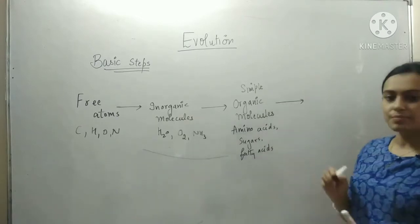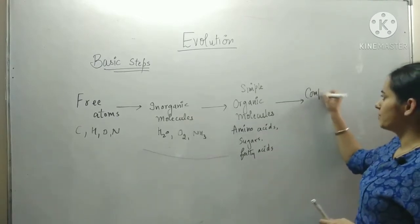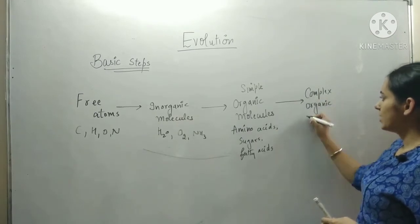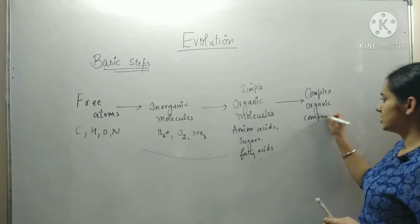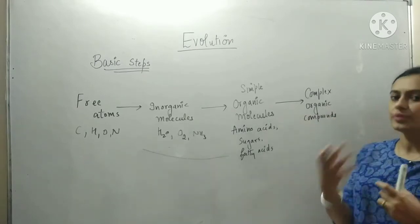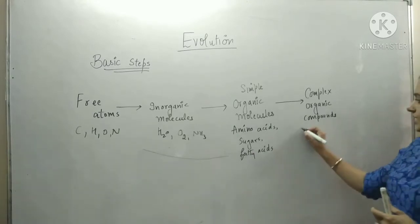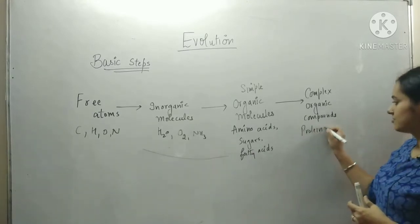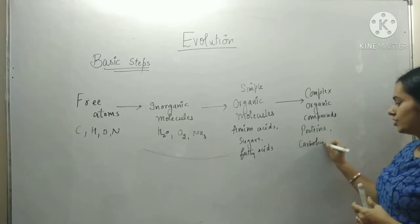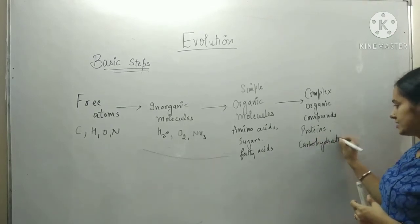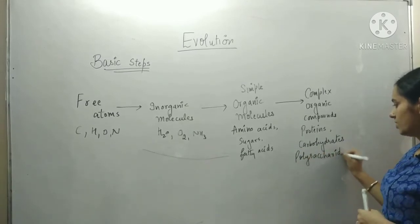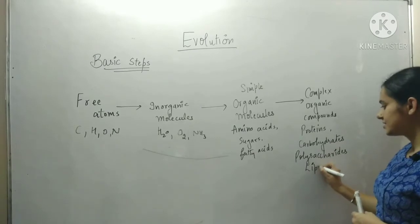After simple organic compounds, we have complex organic compounds. In complex organic compounds, simple organic molecules act as monomers to form a bigger molecule or polymer. Different examples of complex compounds include proteins, carbohydrates or polysaccharides, lipids, fats, etc.